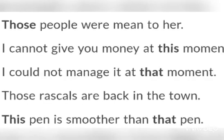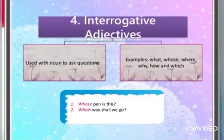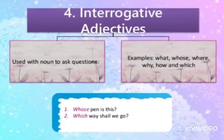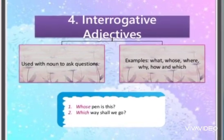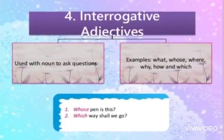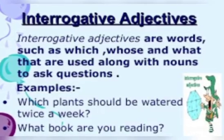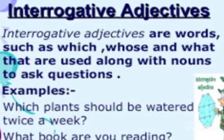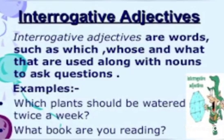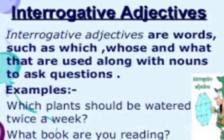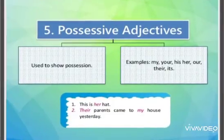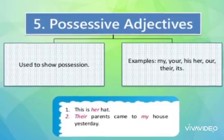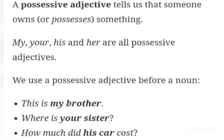Our next kind of adjective is interrogative adjectives. Interrogative adjectives are used with a noun to ask questions. The words like what, whose, where, why, how, and which are used to ask questions related to the noun. For example: 'Which plant should be watered twice a week?' and 'What book are you reading?' In these examples, the words 'which' and 'what' are our interrogative adjectives.